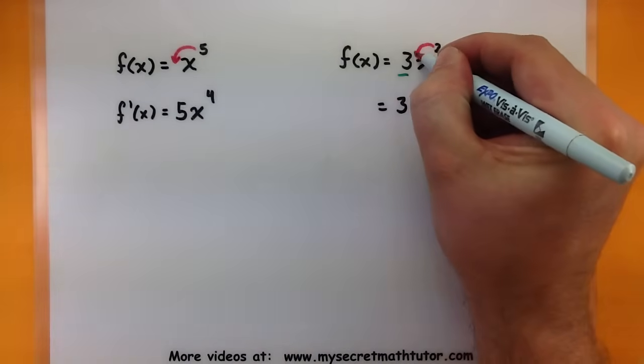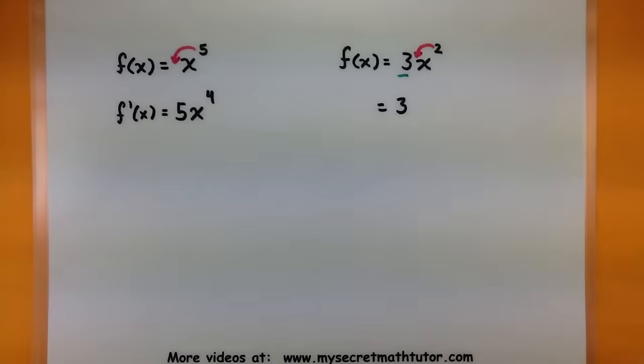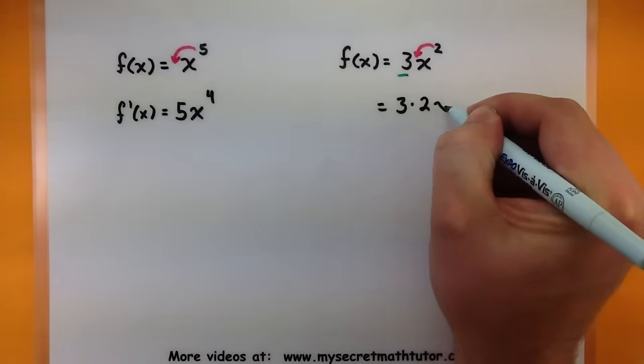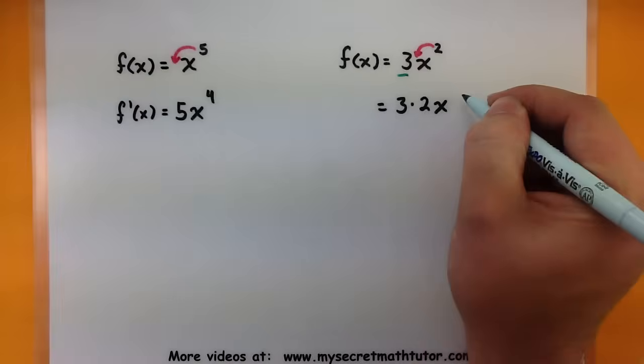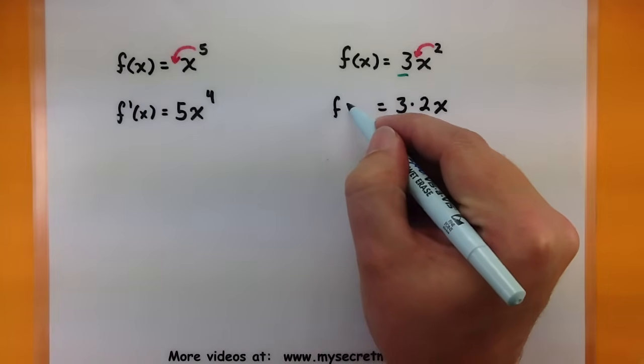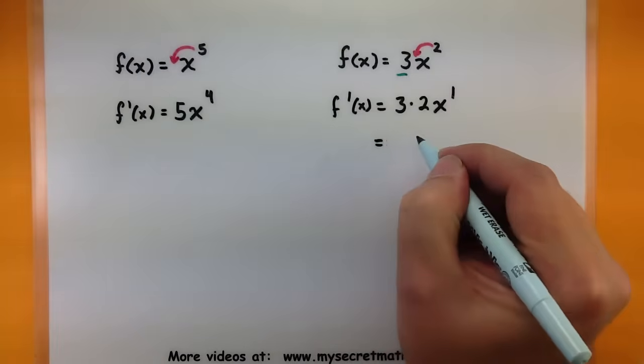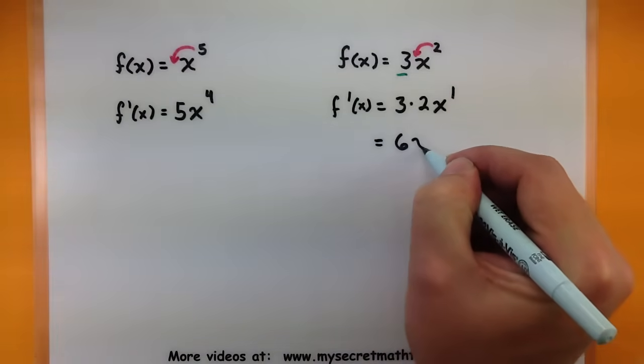I'm going to take the two, drop it right out front. So now I have three multiplied by two. There's my x. And now we reduce that power by one. So two minus one is one, or this is simply 6x.